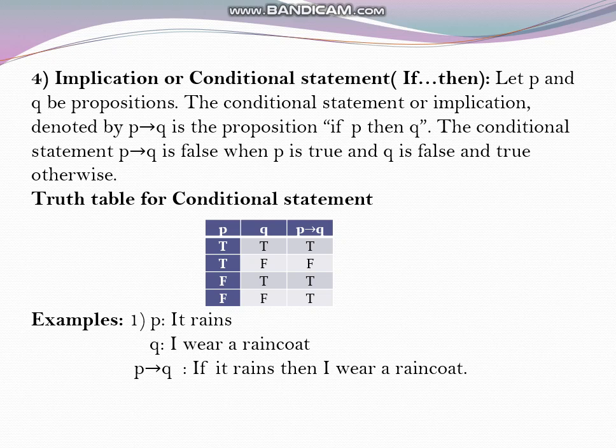Let us see how we write the statement with an example. The proposition p is 'it rains' and q is 'I will wear a raincoat'. Then the p implies q statement is: 'if it rains then I will wear a raincoat.' That means if p is true he is going to wear a raincoat. If it is raining but he is not wearing a raincoat, the truth value is false.